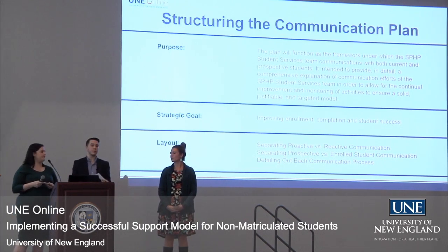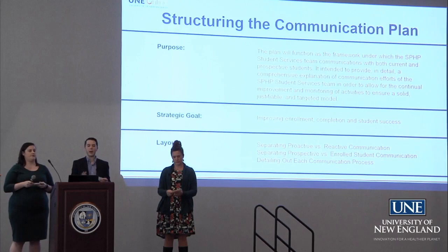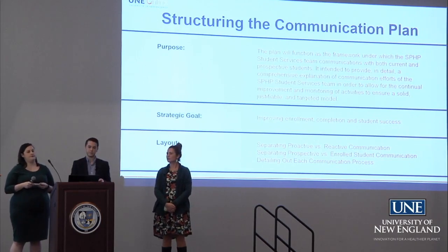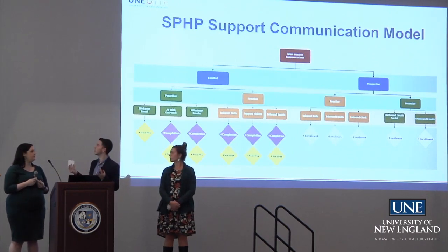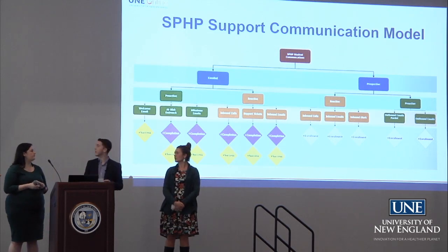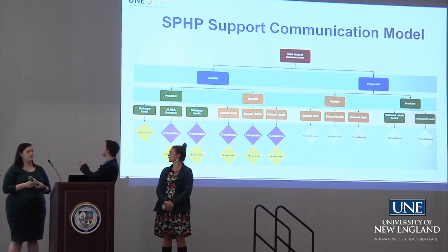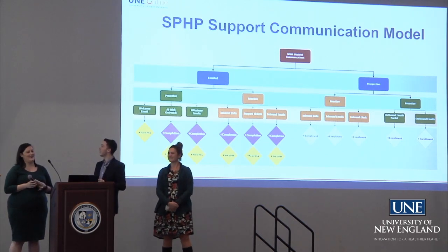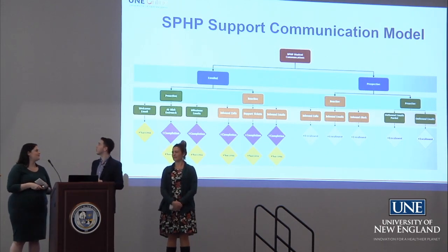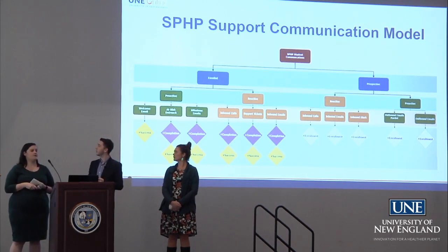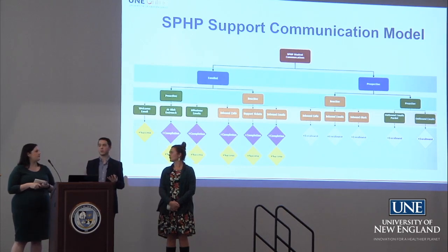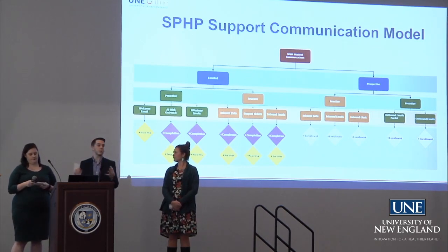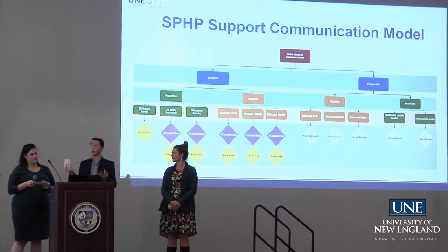We felt it was important to create an actual model chart. On the left you'll see all enrolled student communication, and on the right, prospective student communication — each separated into proactive and reactive communication with the processes listed under each. The three strategic goals — enrollment, completion, and success — appear at the bottom. This provides a quick, easy way to give someone insight into what our communication model looks like.